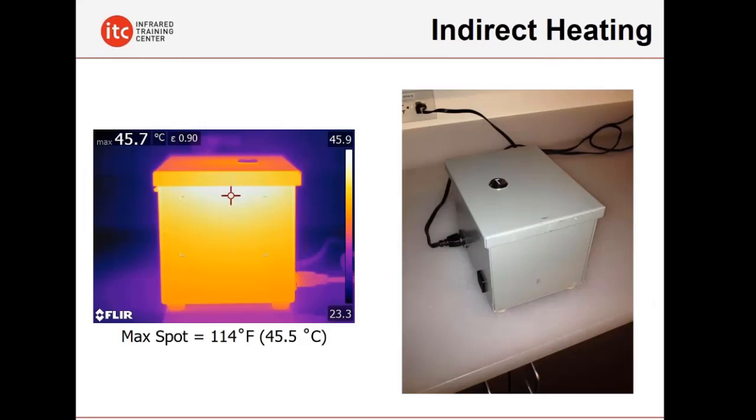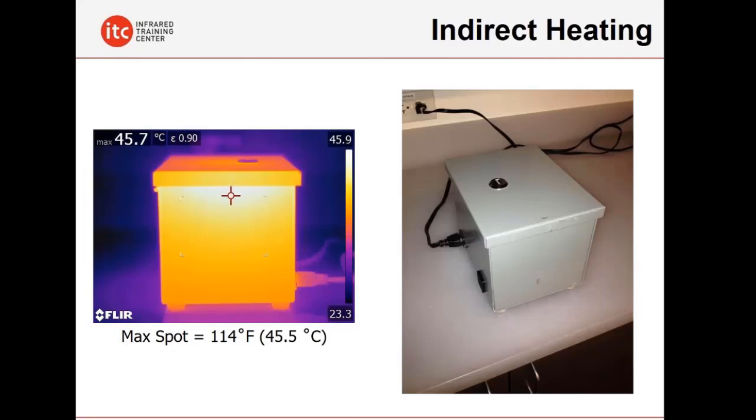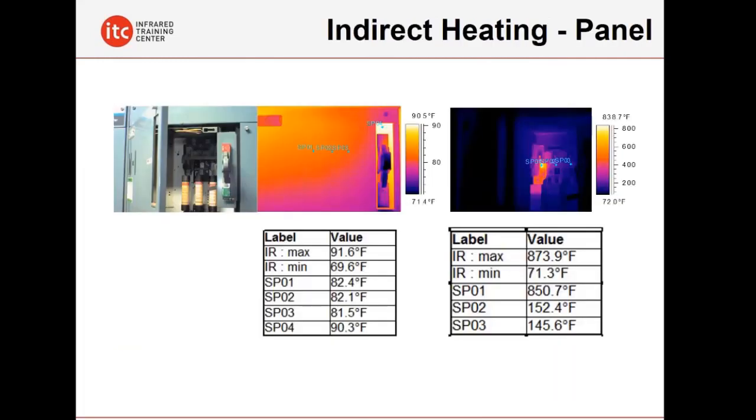And then the misconception that we can see through things. We can look through walls or look through metal panels. That, unfortunately, is not true. This is a metal box lab that we use in our level one training classes. There's an incandescent light bulb on the inside. On the outside, it's only 114 degrees. When you open up the box and look inside at the light bulb, it's over 320 degrees. That 320 degrees is not showing up on the outside. This indirect heating becomes very concerning and very problematic.